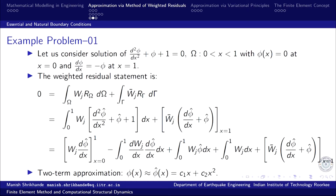We develop the weak formulation of the method of weighted residuals and look at the boundary term. φ is the primary variable and dφ/dx is the secondary variable of the problem. Therefore, the boundary condition φ(0) = 0 is the essential boundary condition, and the condition dφ/dx = −φ at x = 1 is the natural boundary condition. We choose a two-term approximation c₁x + c₂x², which vanishes at x = 0 and satisfies the essential boundary condition — both basis functions are admissible.